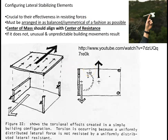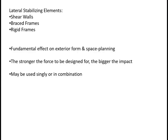If a building doesn't appear symmetrical to the eye, then engineers just have to compensate for it structurally so that the resistance aligns with the forces. It doesn't mean every building has to literally be symmetrical to the naked eye — it just means structurally, we have to move that point of resistance into alignment with the forces it's going to experience. The elements we use to stabilize are shear walls, braced frames, and rigid frames. There are architectural considerations because they have a big effect on the exterior form and inside space planning. They could be used singly or in combination to fight back against lateral forces.